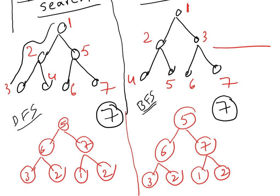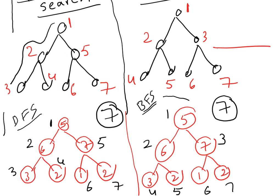Using DFS, the first search goes to the root, then second, third, then four, five, six, seven. In BFS: one, two, three, four, five, six, seven across levels. So for DFS, how many searches are needed? How many searches total?